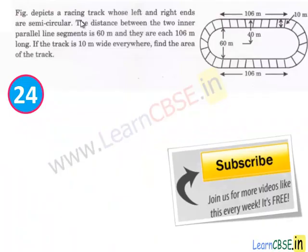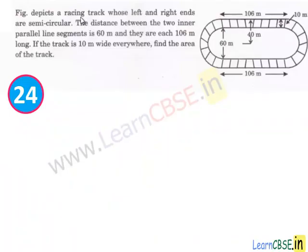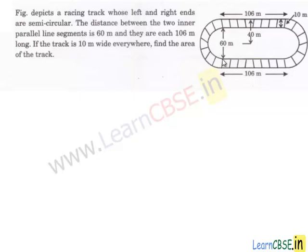Let's move to the next question. Here we are given a figure which is a racing track whose left and right ends are semicircular. The distance between two inner parallel line segments is 60 meters and the length of each segment is 160 meters, and the width of the track is 10 meters. We have to find the area of the track — that is, the area of the shaded region. So let's draw this diagram and find its area.